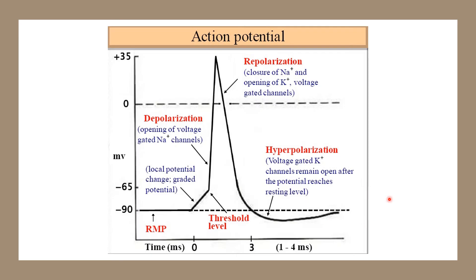This diagram explains the action potential. First, the neuron is in resting membrane potential. Then it reaches the threshold level. After that, depolarization occurs — there is an opening of voltage-gated sodium channels. After depolarization, repolarization occurs, where the sodium gate closes and voltage-gated potassium channels open. After repolarization, there is hyperpolarization, where the voltage-gated potassium channels remain open after the potential reaches resting level.